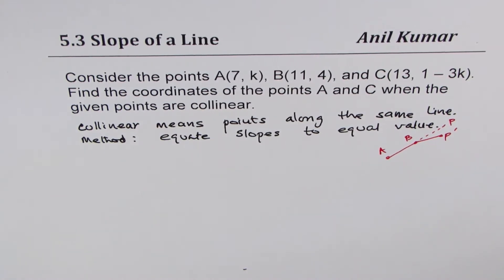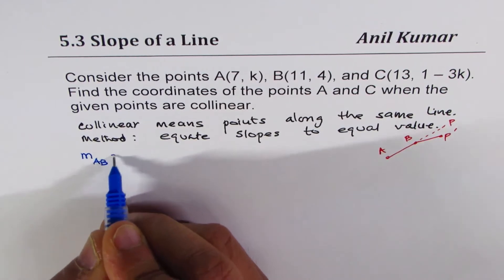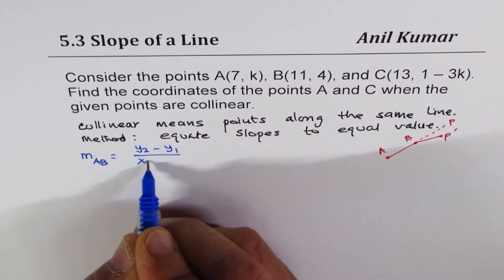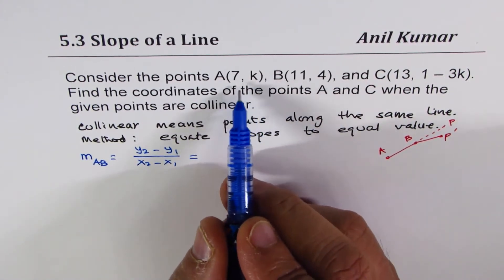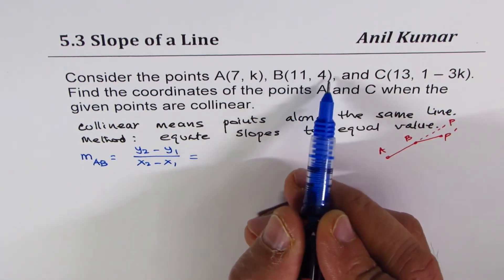So that's the idea. So let's begin by finding slope between A and B. So we can write slope M between A and B. Slope formula is Y2 minus Y1 divided by X2 minus X1. Now, why did we select B?